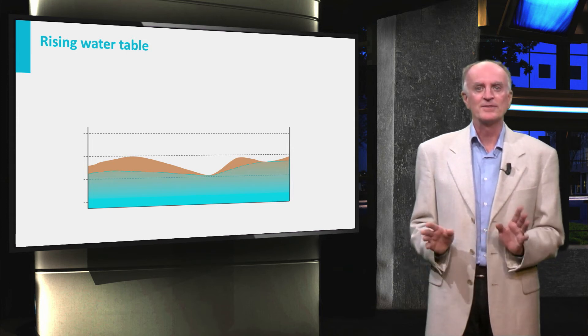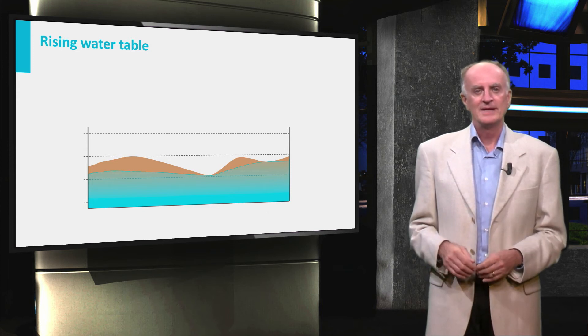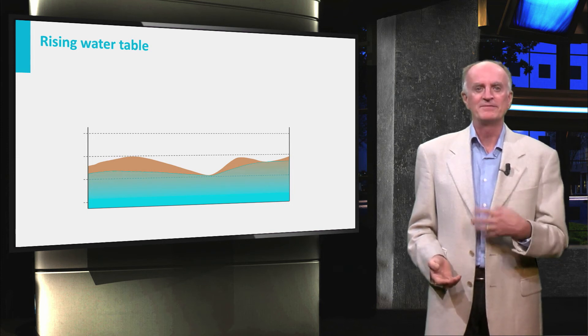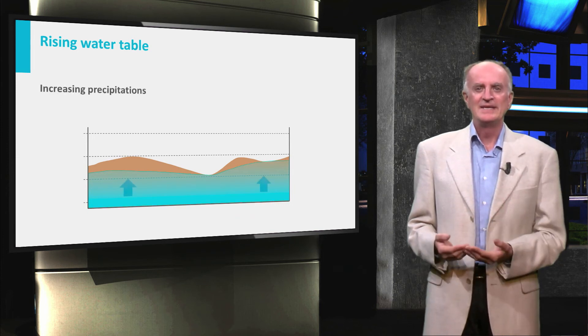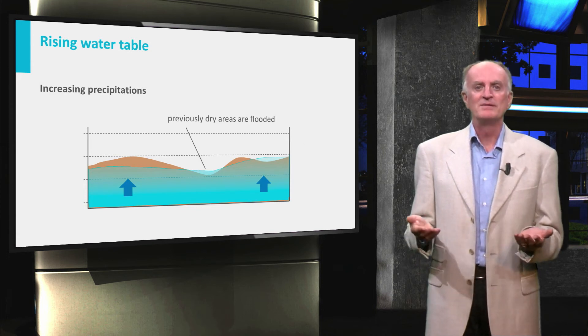If this is not the case, then very important modifications affect the system. Imagine, for instance, a situation where precipitation increased significantly. This will lead to a rise in the water table and areas which were previously just above it will be flooded.